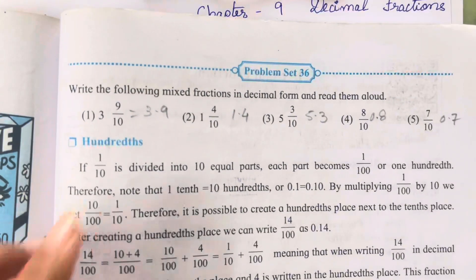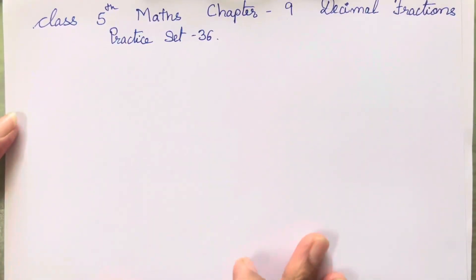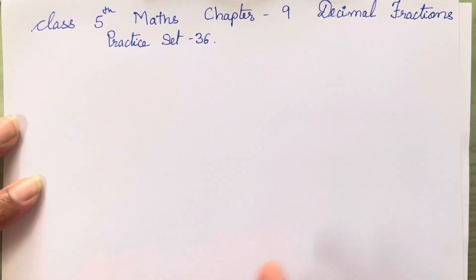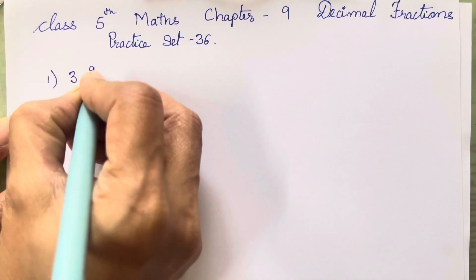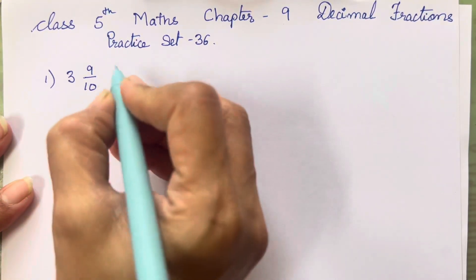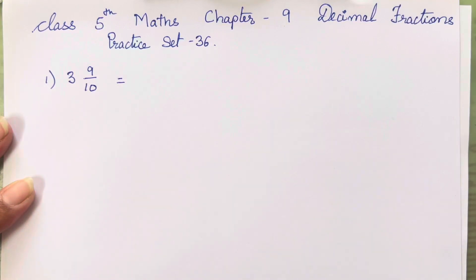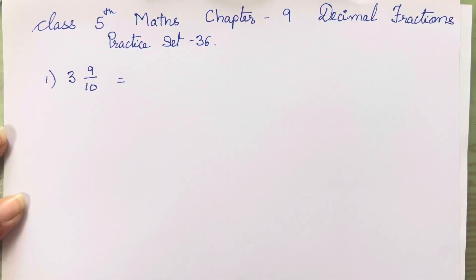So this is the exercise. Let's solve it. The first one is 3 9/10. This is a mixed fraction and what we have to do is convert it into decimal form and write it. You can read the question on page number 53 of your textbook. First we have to write 3 before the decimal point.